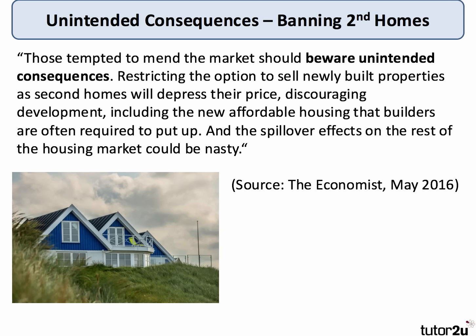A recent example from The Economist: banning second homes. One or two local councils are thinking of banning second homes — Cornwall and St Ives are looking at doing this to make housing more affordable for local people. But The Economist warned: restricting the option to sell newly built properties as second homes will depress their price, discouraging new housing development — including the affordable homes that builders are often required to include. The spillover effects on the rest of the housing market could be nasty. You could ban second homes and end up with less house building overall, making the scarcity issue even worse.